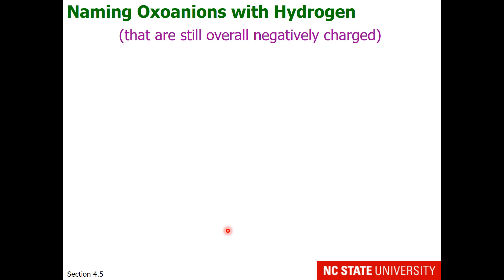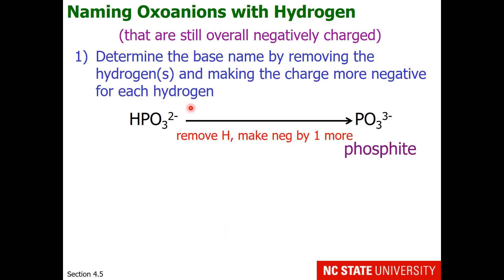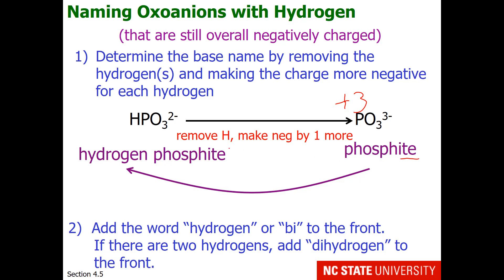You may encounter oxoanions that have hydrogen on them but are still overall negatively charged. An example is HPO3 2−. To name this, remove the hydrogen and make the charge more negative by one for each hydrogen removed, giving PO4 3−. Three oxygens have a −6 oxidation state, so phosphorus must be +3. Since phosphorus is in group 5 with an oxidation state of +3, we use the '-ite' ending — this is phosphite. Going back to the original ion, we add the word 'hydrogen' to the front: hydrogen phosphite.